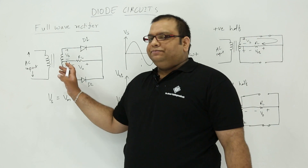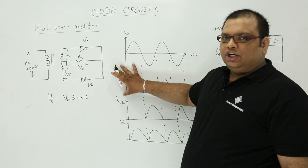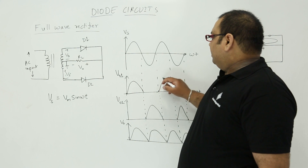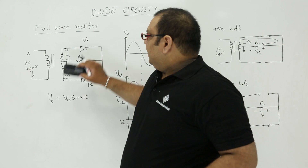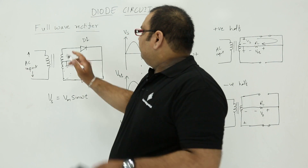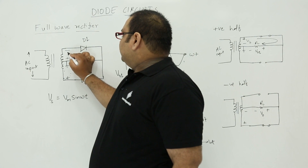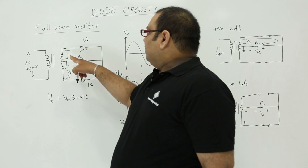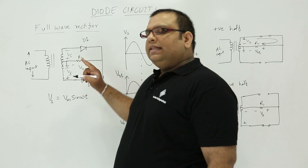Now when you look at the negative half: the waveform for V01 during the positive half shows only positive pulses, with the negative half being zero. During the negative half, the polarity reverses — this terminal becomes minus and this becomes plus. So at the center tap, one side is plus Vs and the other is minus Vs. In this condition, diode D1 is in the off state and diode D2 turns on.